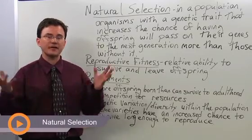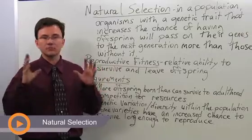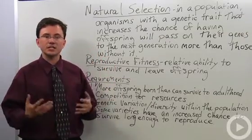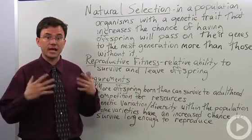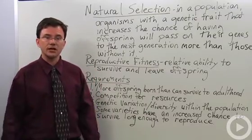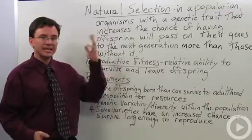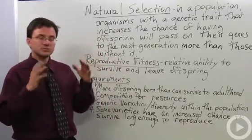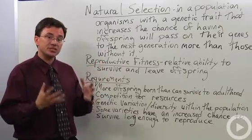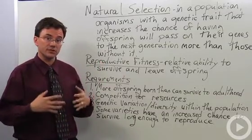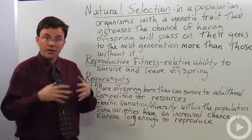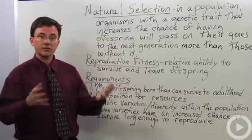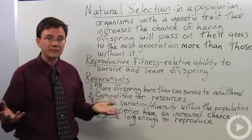One of the major forces that affects a group of organisms' evolution over time is this idea that Charles Darwin came up with called natural selection. The idea of natural selection is that in a population, some organisms who happen to have a genetic trait — if that genetic trait increases their chances of living long enough to have offspring — they will pass on more of their genes to the next generation than those organisms who don't have that genetic trait.